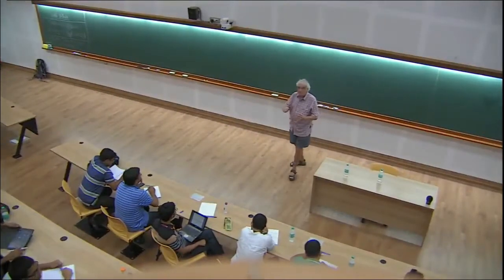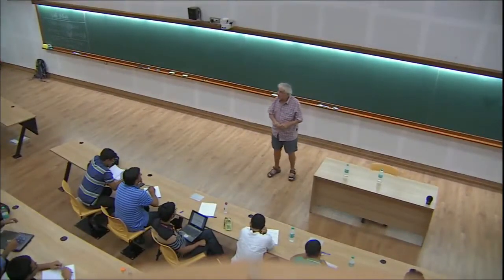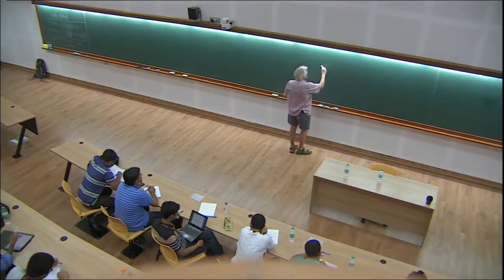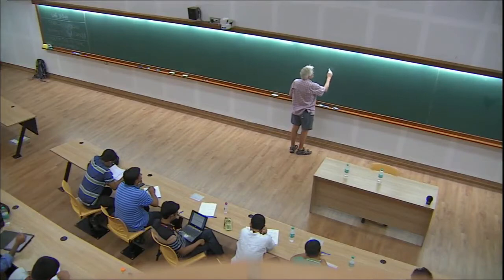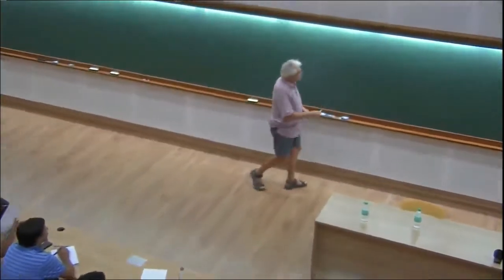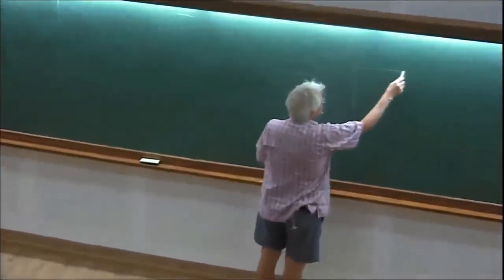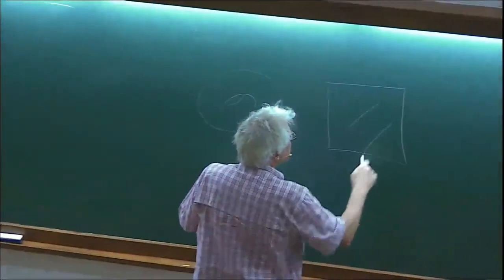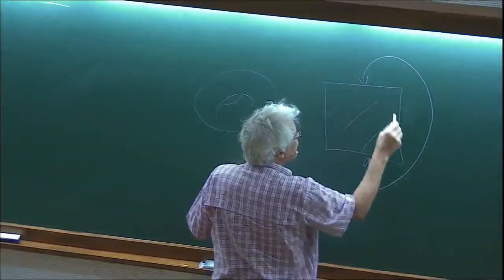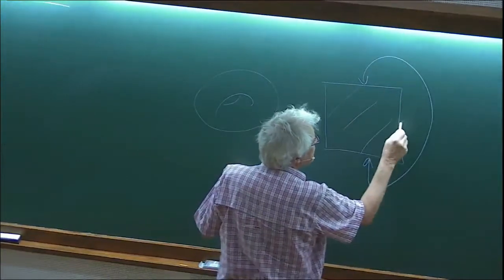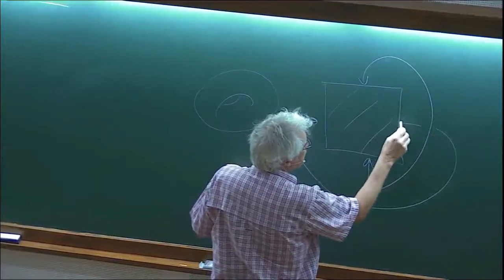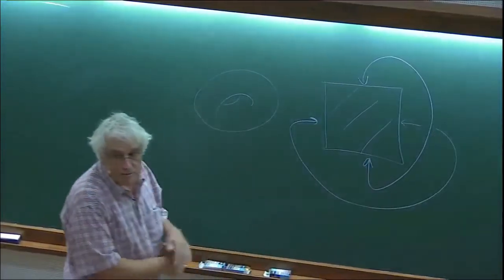So, let's first make a surface, just to warm up. If you wish to make a torus, everybody knows how to do it: you take a piece of paper, glue this side to this side, and this side to this side. And then you get a torus.